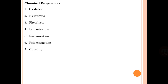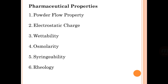Chemical properties to check include oxidation, hydrolysis, photolysis, isomerization, racemization, polymerization, and chirality. Pharmaceutical properties include powder flow, electrostatic charge, wettability, osmolarity, syringability, and rheology.